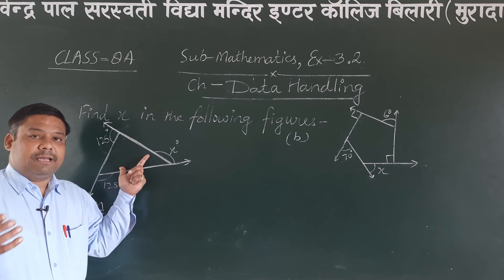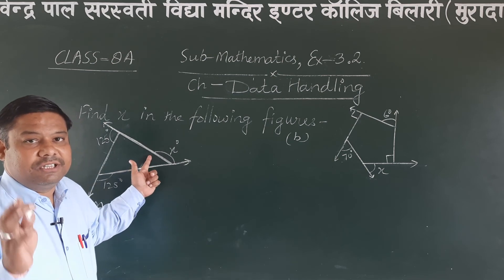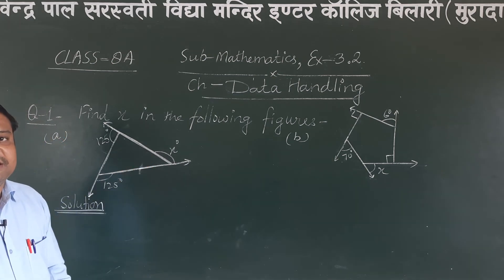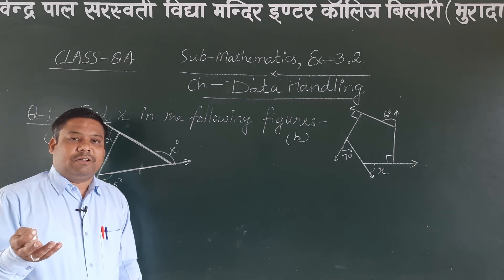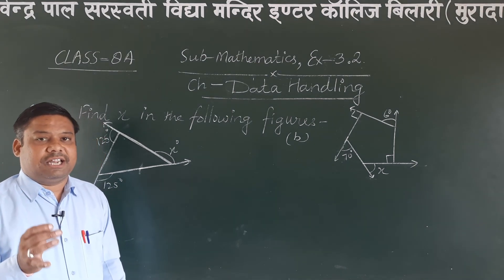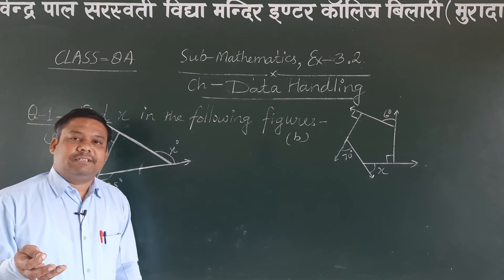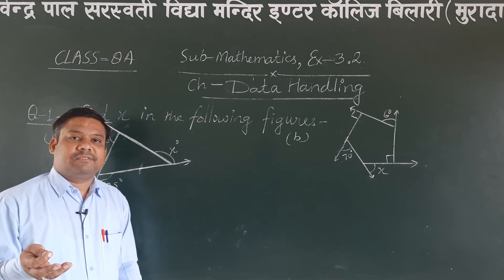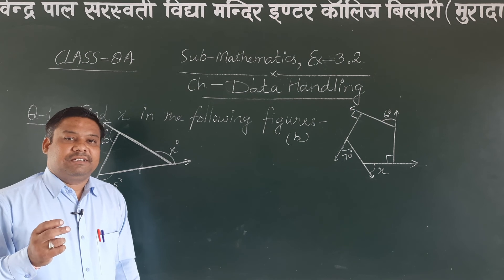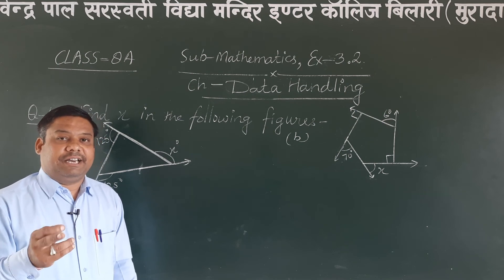In my previous videos I have told you that the sum of exterior angles in any polygon — the sum of exterior angles of any polygon — is three hundred sixty degrees.